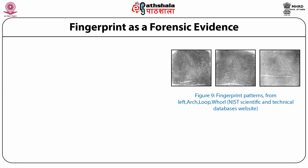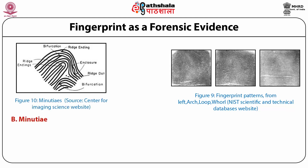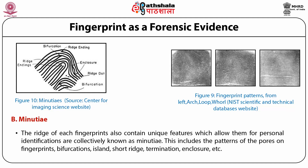Along with fingerprint patterns, the ridges of each fingerprint also contain unique features known as minutiae, which allow personal identification. These include the pattern of the pores on the fingerprint, bifurcation, ridge endings, short ridge, termination, enclosure, and others. Figures show examples of arch, loop, and whorl fingerprint patterns, as well as minutiae details.